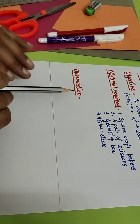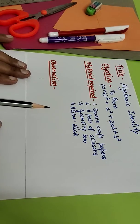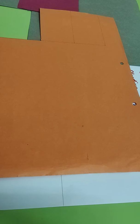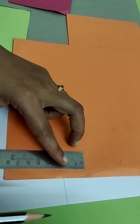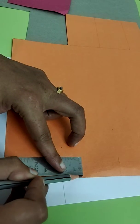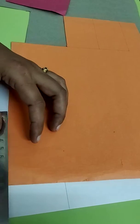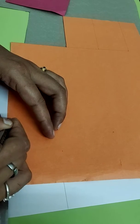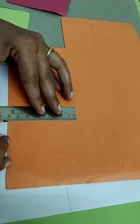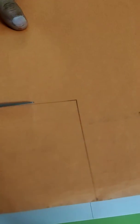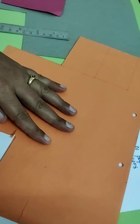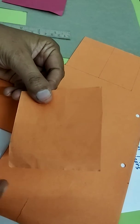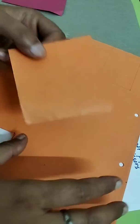Now next is observation that we are going to write after doing this activity. So for this first of all I am taking the orange paper. I am taking 8cm length and going to cut the square piece with the side 8.